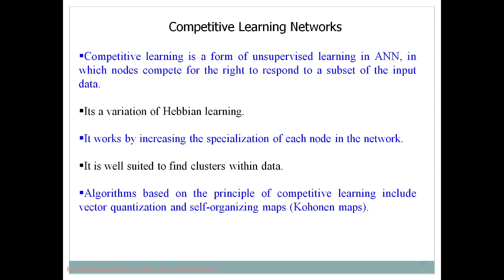But when there is an exam, only one student will be the topper. That means even though the teacher is giving the same input to all students, there will be only one student who is a topper in the class. From this, try to correlate the concept of competitive learning. All 70 students are competing with each other to learn and excel in the exam, and only one student is able to excel.